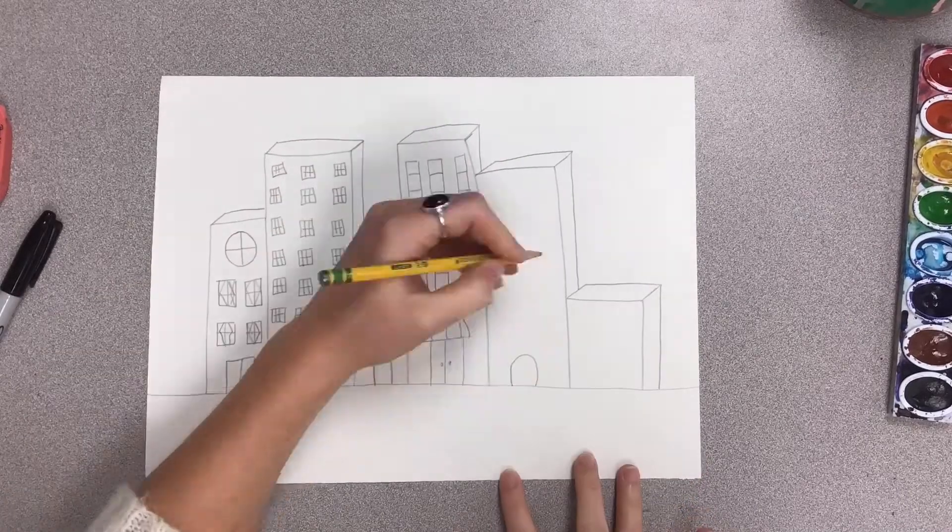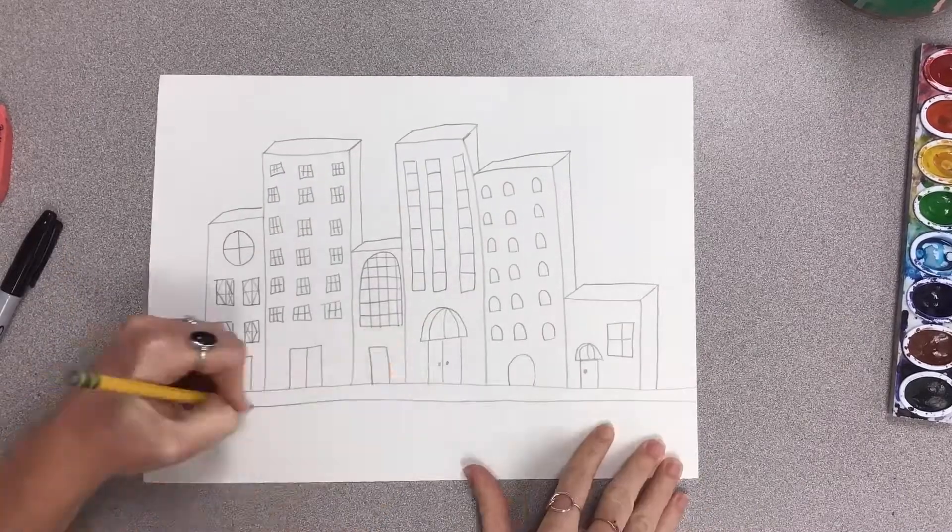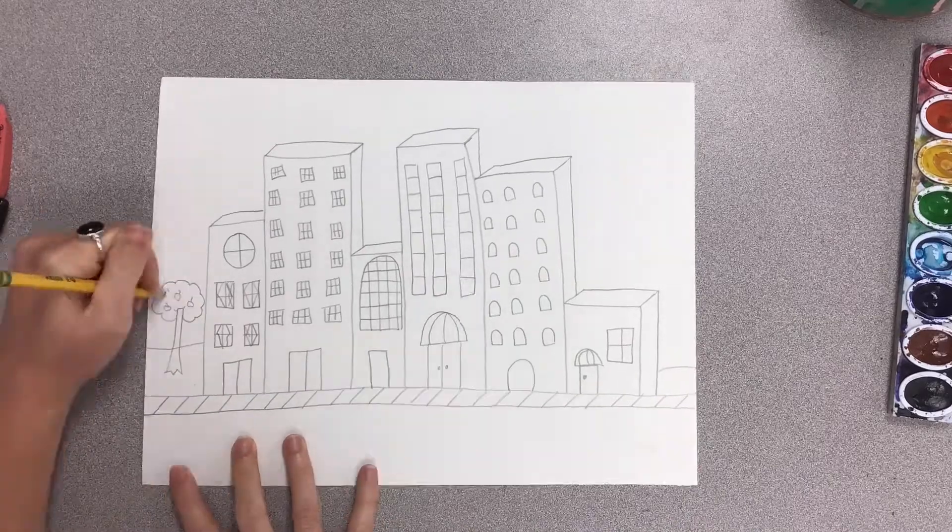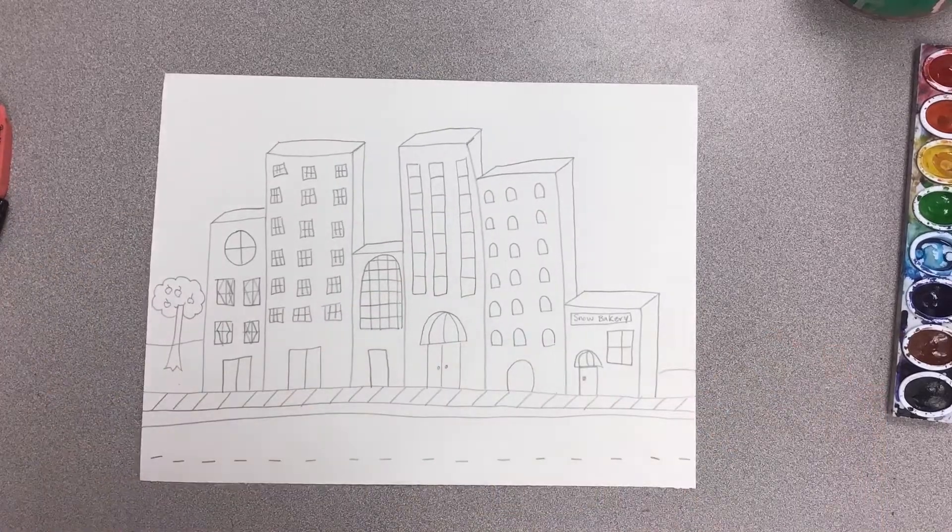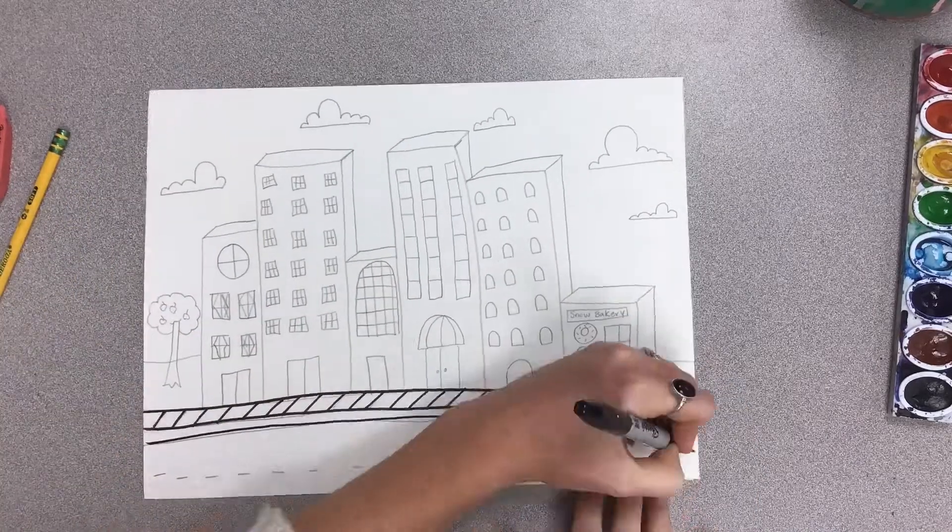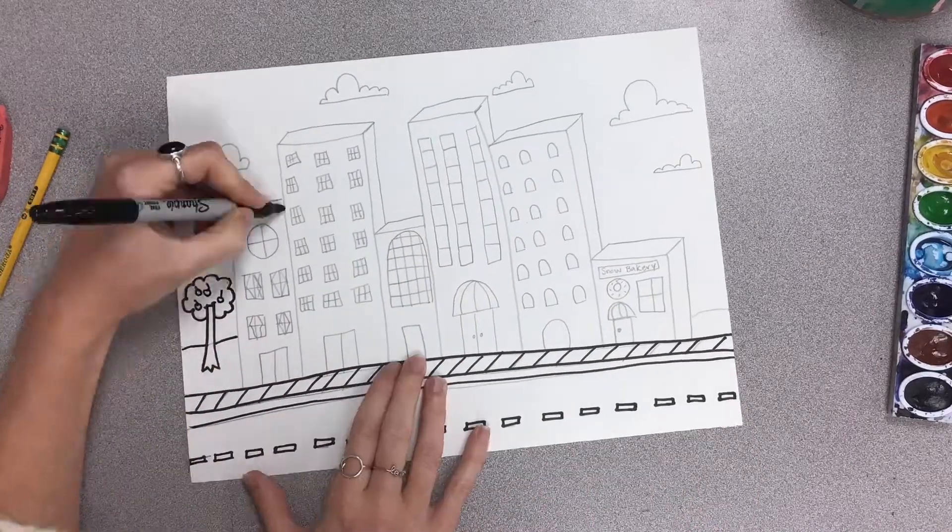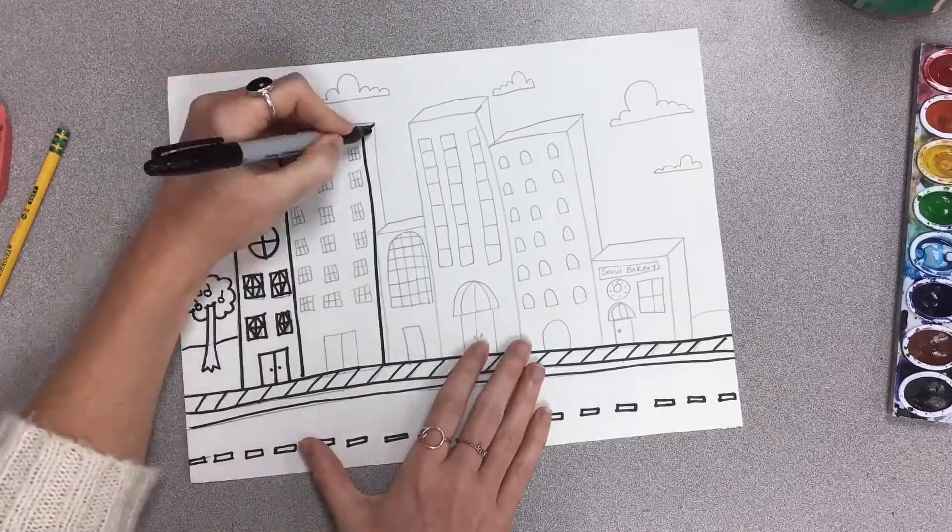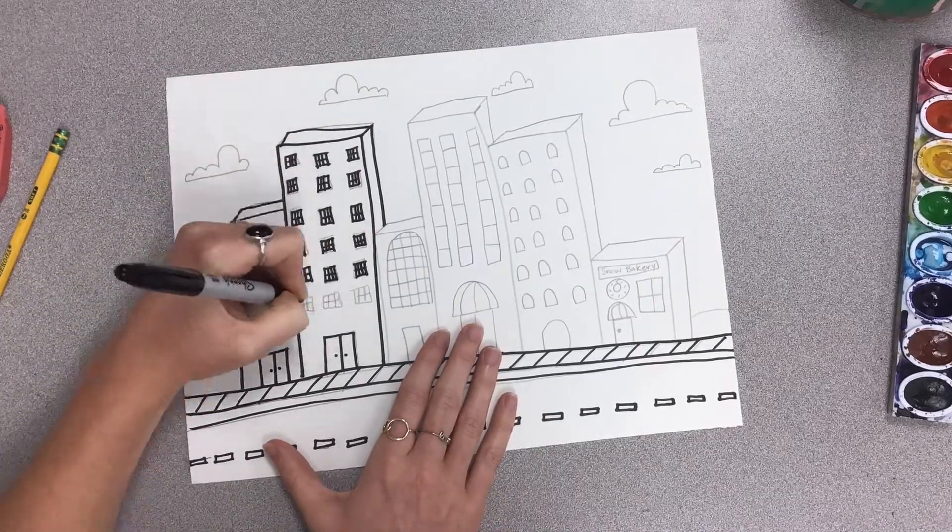You can even add an awning on top of the door if you want to, to make it look more like a little shop. You can add signs like a bakery, you can add trees and clouds and a sidewalk and some lines on the road.